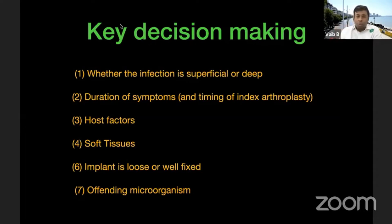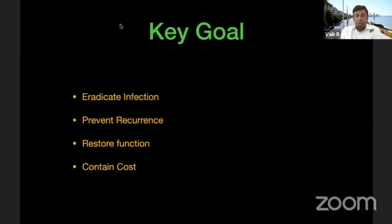Key decision-making involves seven factors: whether the infection is superficial or deep; duration of symptoms relative to the index arthroplasty; host status — which is critical; soft tissue condition; implant status — whether loose or well-fixed; and the offending microorganism. Based on these, you can build your own algorithm. The key goals are to eradicate infection, prevent recurrence, restore function, and contain cost — which is a major concern whether you are in Australia, the US, or India.